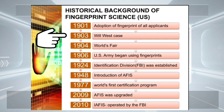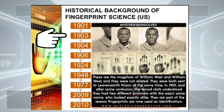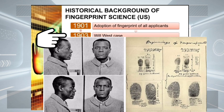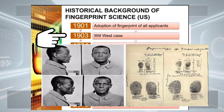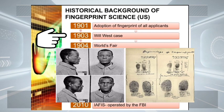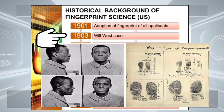A prisoner named Will West arrived at Leavenworth. The record clerk took one look at West's mugshot and insisted he had seen him before. West disagreed and said he had never been in Leavenworth before. The record clerk ran the Bertillon system over him and retrieved a file based on West's measurements. A mugshot was shown to West and he was confused — the man in the mugshot had the exact same measurements as West and was virtually identical. When the clerk turned over William West's record card, he found it was a man already in the penitentiary serving a life sentence for murder.